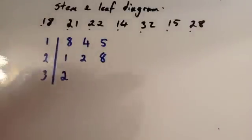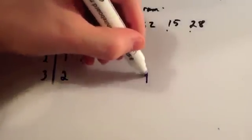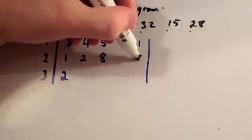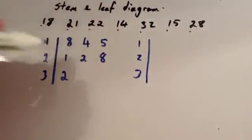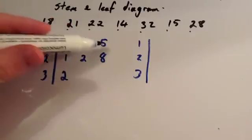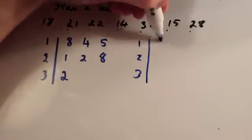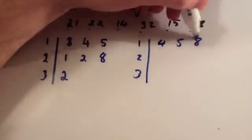Now, this is unordered, so now we've got to draw an ordered stem and leaf diagram. So we'll draw another vertical line, and we'll put 1, 2, 3. And now we're just going to order these numbers. So 4 is the smallest, then 5, and then 8. So we'll do 4, 5, and 8.